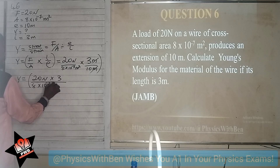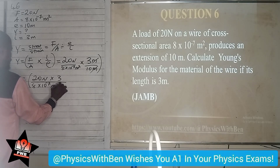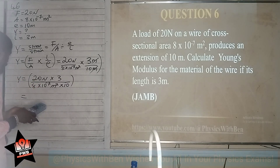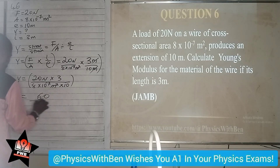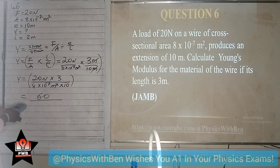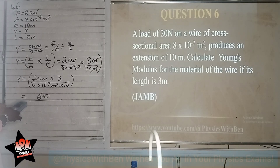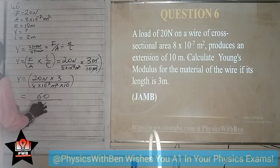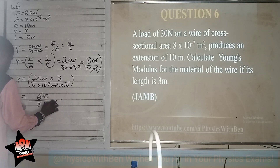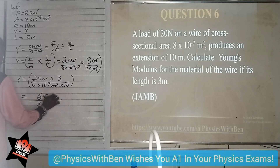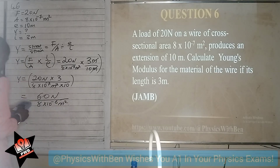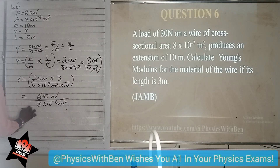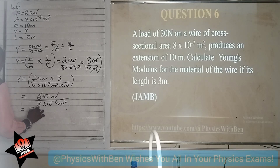So we calculate: 20 times 3 gives us 60. Then 60 divided by 8×10⁻⁷ times 10, which gives us 8×10⁻⁶ in the denominator. So we have 60 divided by 8×10⁻⁶, which gives us 7,500,000.